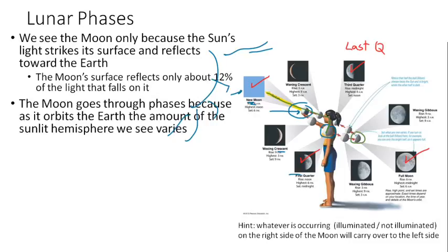Back around here, if we have a straight line between the sun, the earth, and the moon, we have a full moon. And then the moon continues.